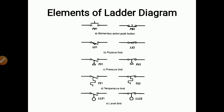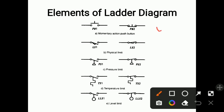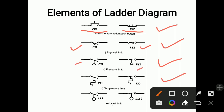These are additional symbols used for ladder diagrams. First is a momentary action push button, denoted PB1 and PB2, with two cases: normally open and normally closed. Second is a physical limit switch with symbol denoted LS1 and LS2 — normally open and normally closed. Then the pressure limit switch, with normally open and normally closed symbols. Then a temperature limit switch, and lastly level limit switches — each with normally open and normally closed variants. While drawing ladder diagrams, you must remember all these symbols.